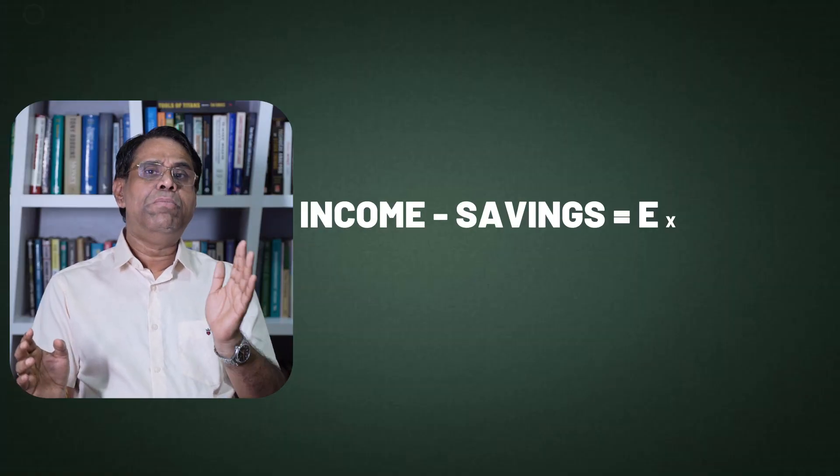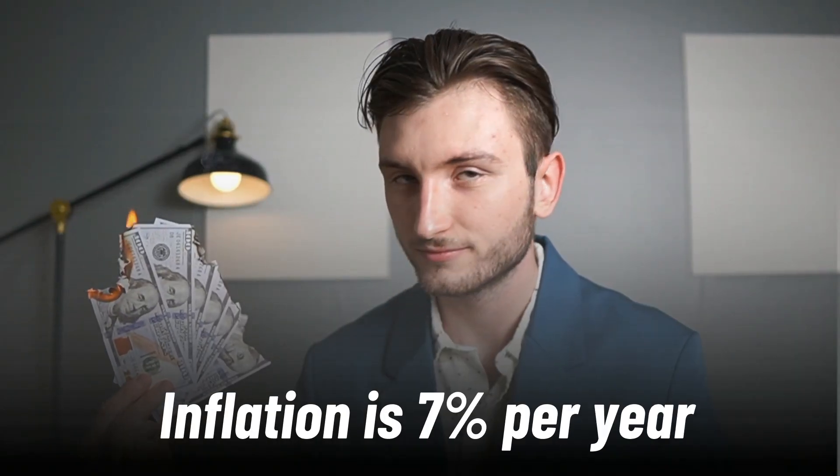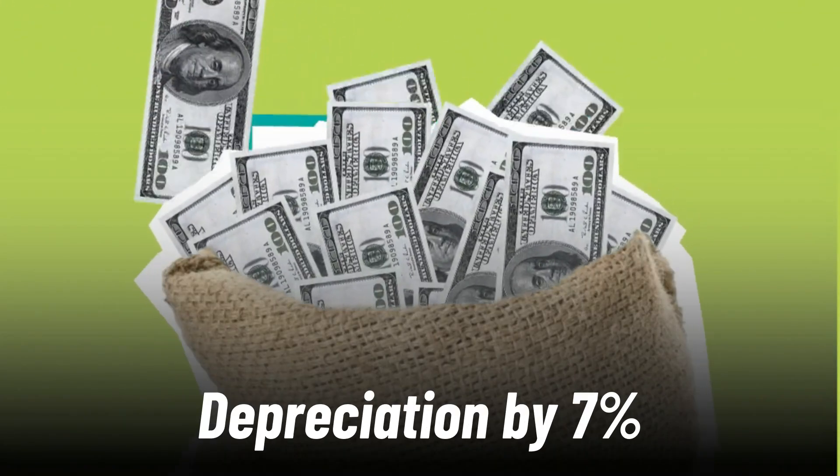The last equation — the equation of financial freedom — is equation number four: income minus saving is equal to expense. Please remember, you will not have a pension. Inflation is at seven percent per year, meaning every year your money depreciates by seven percent, and you will require seven percent more every year to buy the same things.